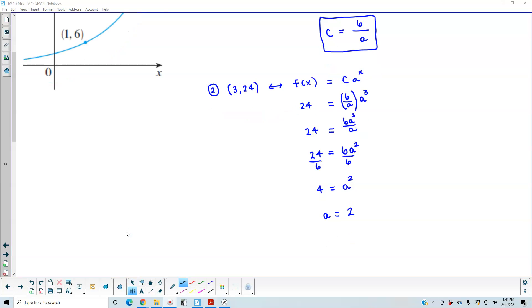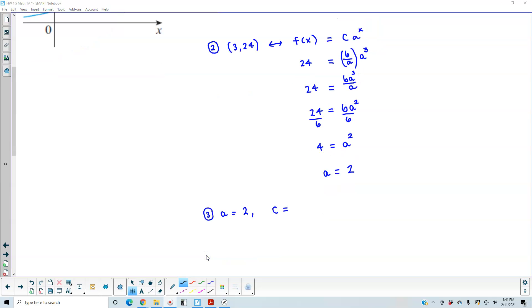So in the function for part 3, we determine that the value of a is equal to 2. We can determine that the value of c is 6 divided by a, which is 6 divided by 2, which is equal to 3.